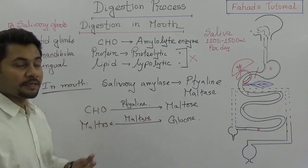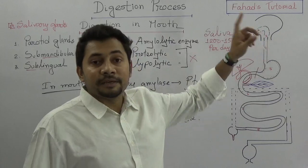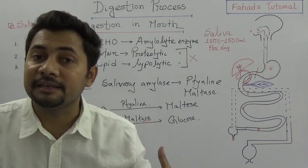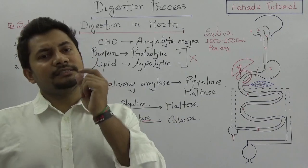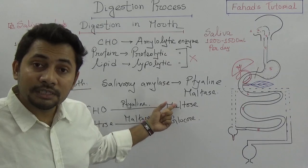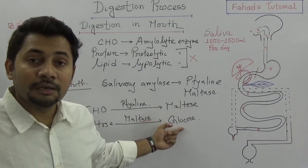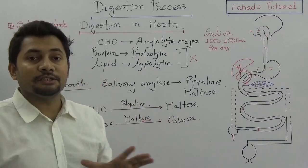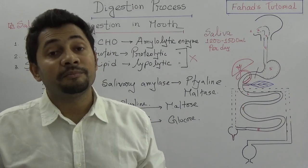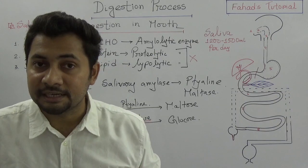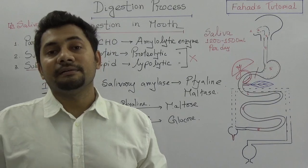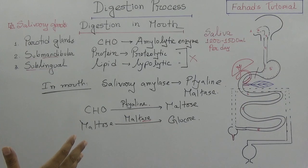In short, when we take food in the mouth, saliva is mixed in. In saliva we have salivary amylase, which is known as ptyalin, and some amount of maltase. Ptyalin turns carbohydrate into maltose, and then maltose is turned into glucose with the activity of maltase. So these reactions and changes take place in our mouth. But there is no presence of proteolytic enzymes and lipolytic enzymes in our mouth, so protein digestion and lipid digestion do not occur in the mouth. This is a short description about digestion in the mouth.